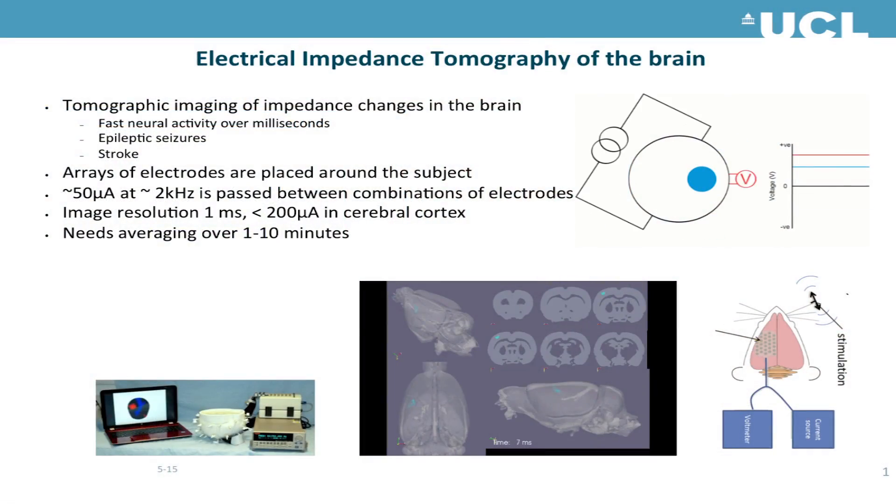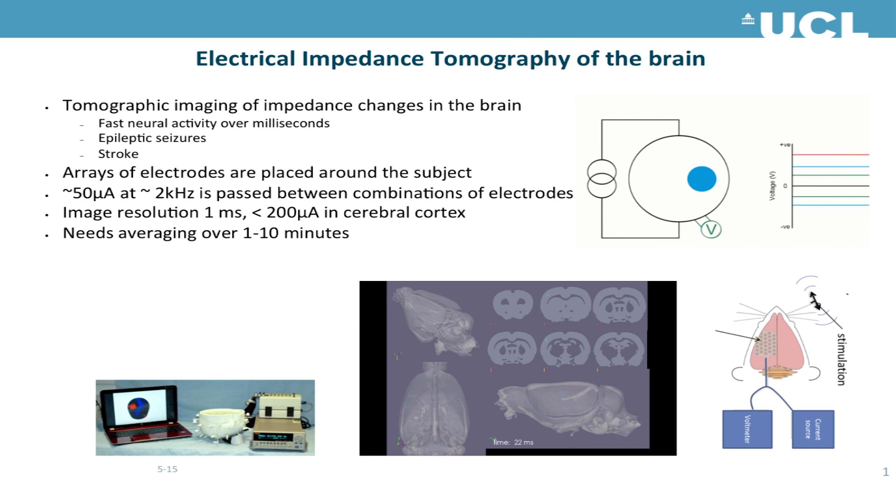Hello, my name is David Holder. I'm a neurologist at UCH, but also run an interdisciplinary bioengineering neurophysiology research group here in medical physics at UCL. Our main interest is the new technique of electrical impedance tomography, which is a small portable medical imaging method — it looks a bit like an EEG machine with electrodes and an electrode helmet placed on the head.